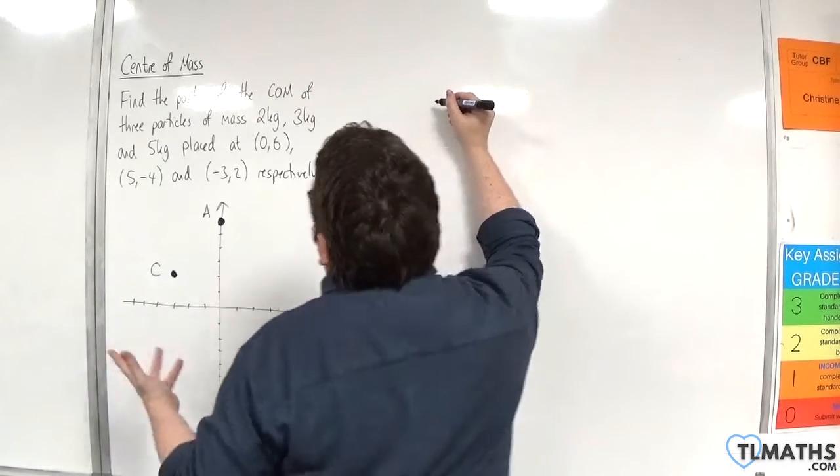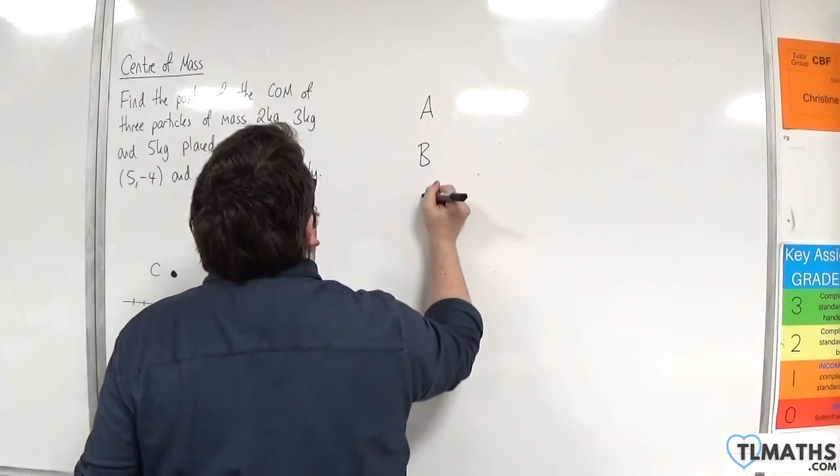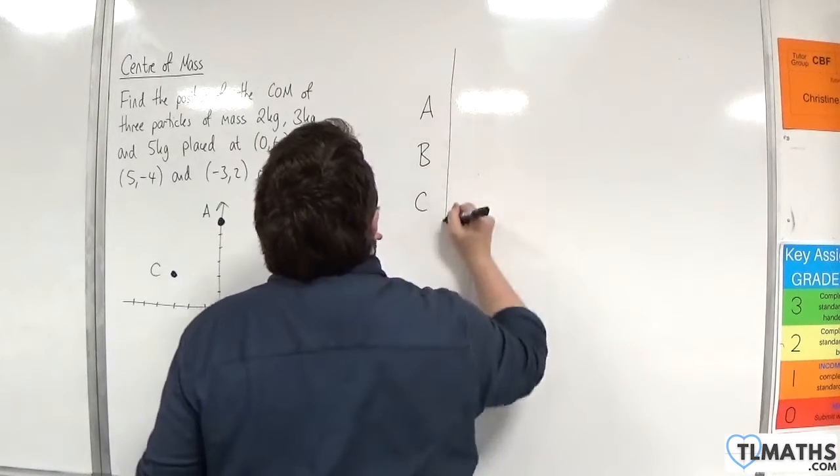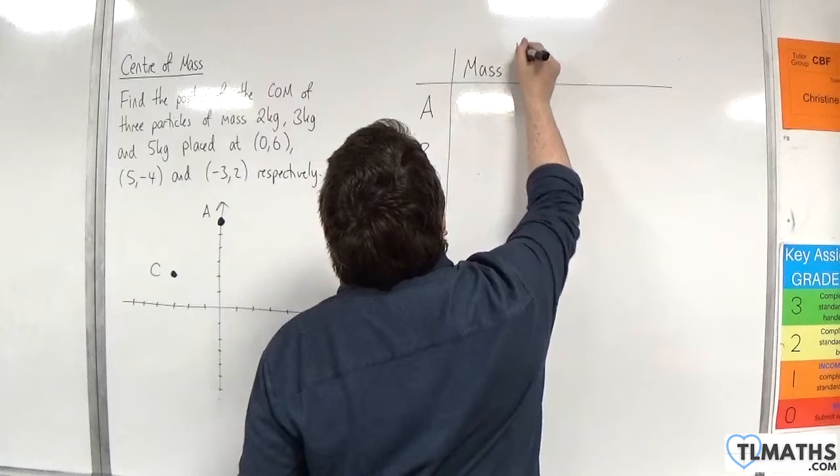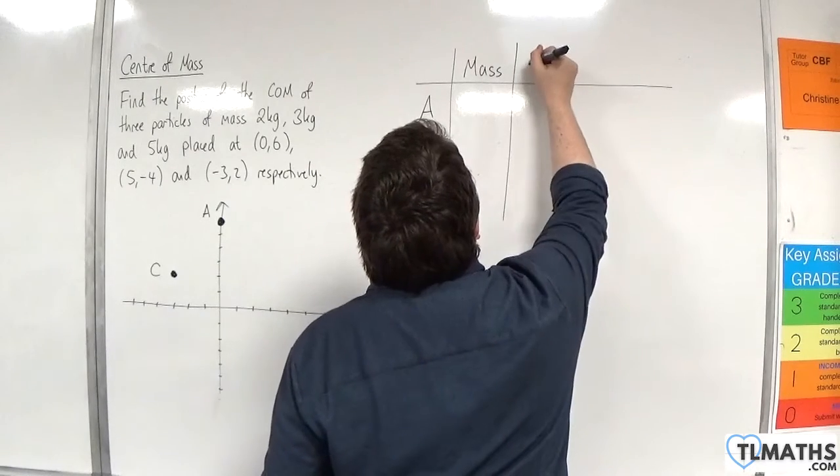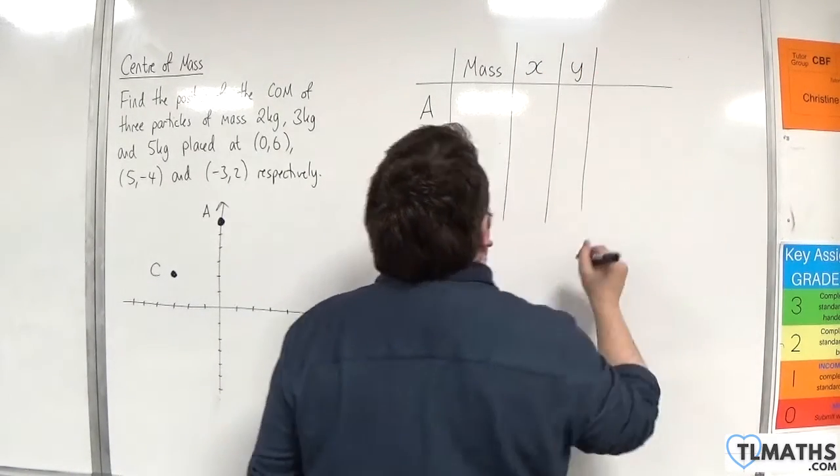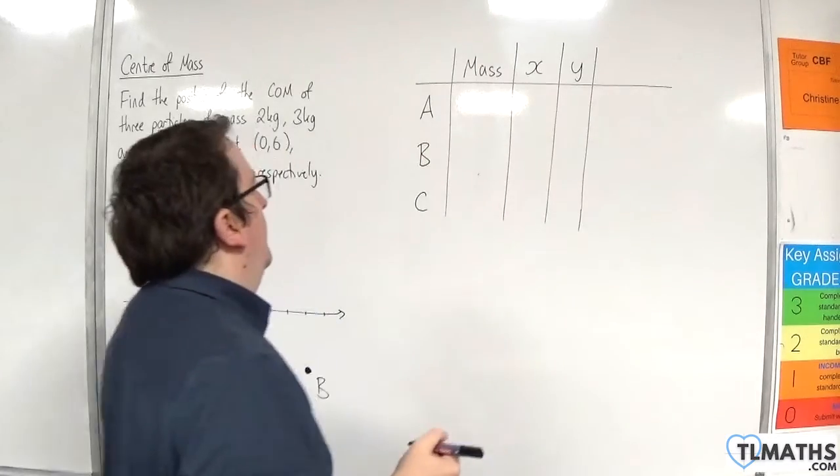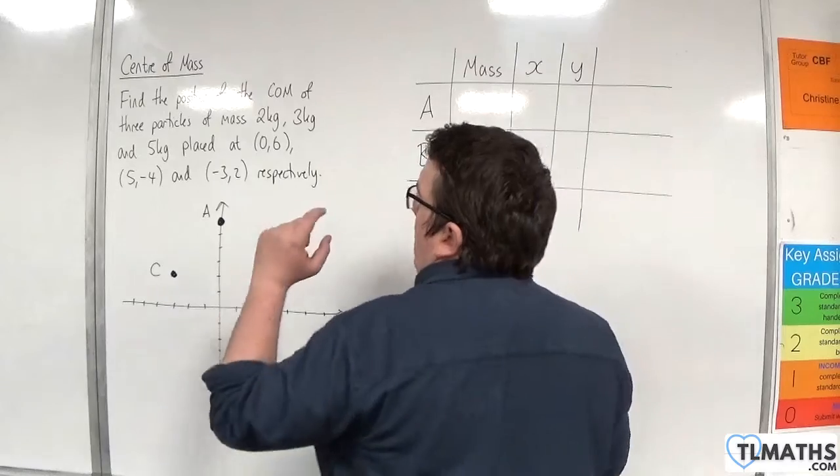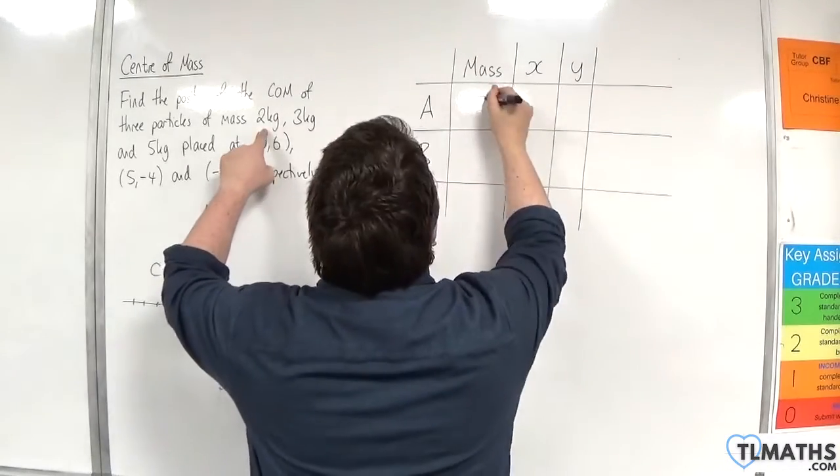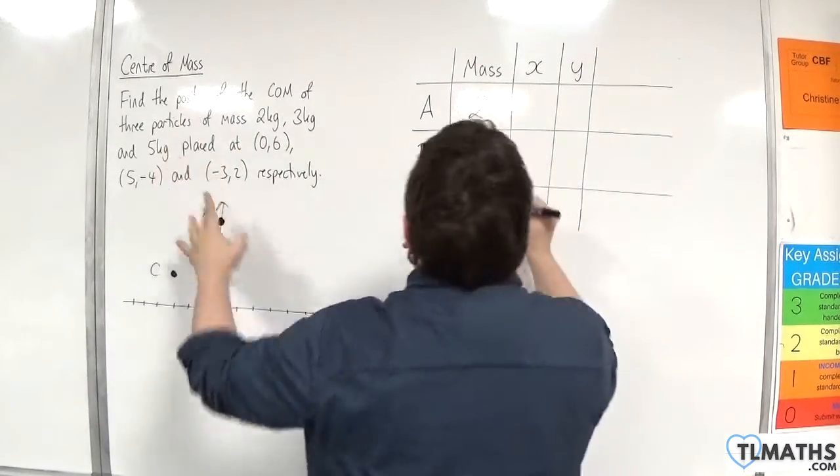So I'm going to do it as a weighted average in a table as we've done the previous example. So A, B, C. Each one has a mass, an x-coordinate and a y-coordinate. Okay, so what we have at this point is A has a mass of 2 kilos, then we've got B has a mass of 3 kilos, and C has a mass of 5 kilos.